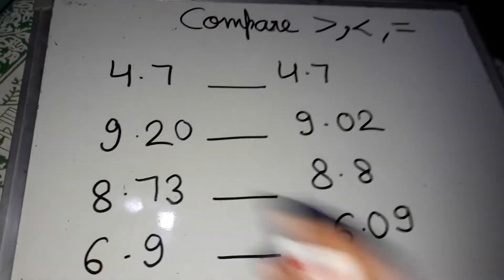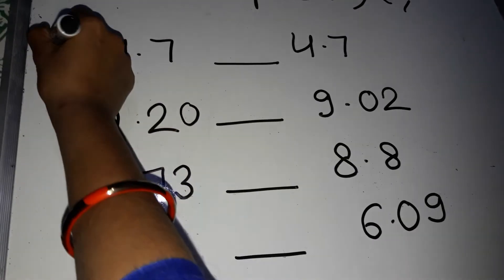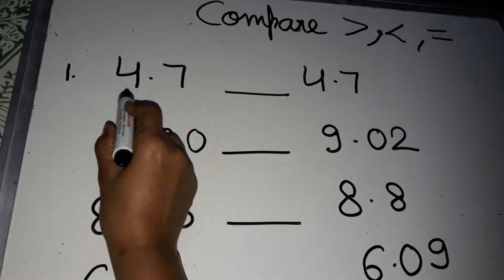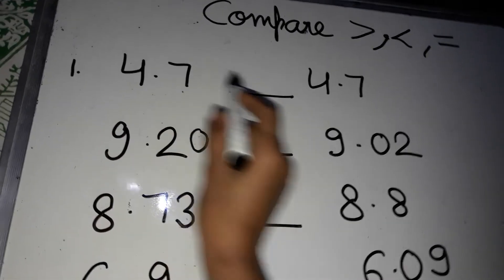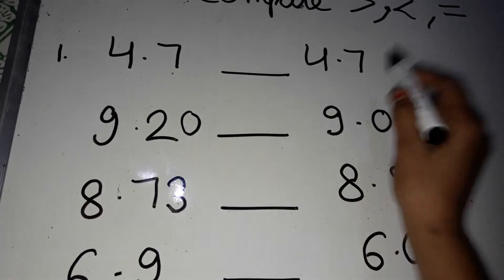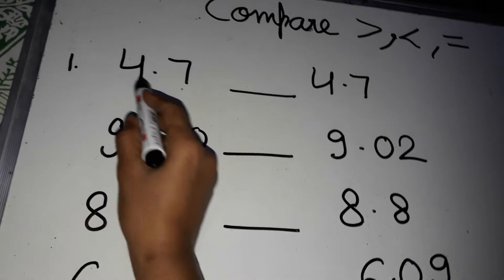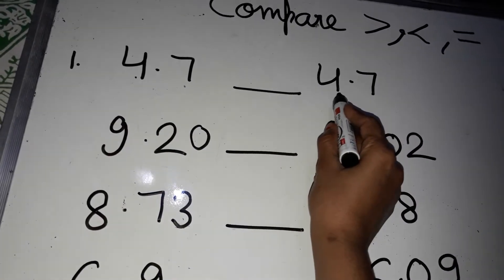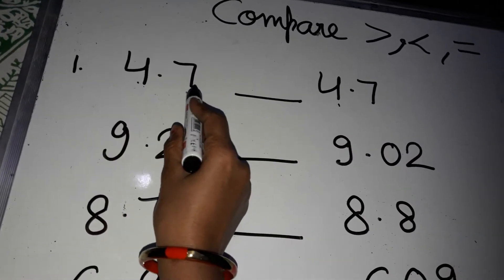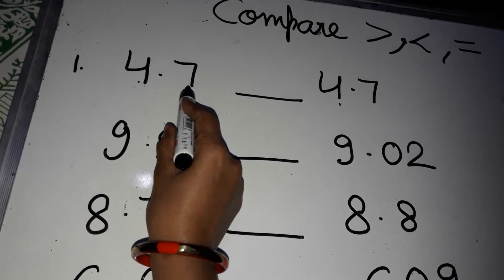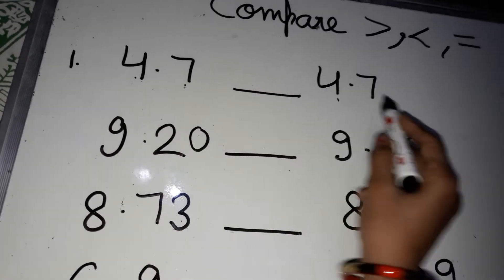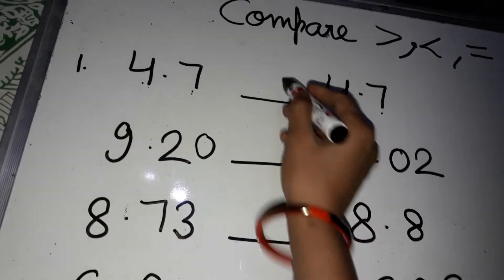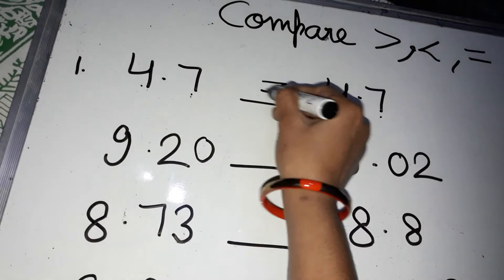See my first example. Here is 4.7 and here is 4.7. The whole number is equal to the whole number. Then we will move to the next number: that is 7, and here it is also 7. So both are equal — this is equal.